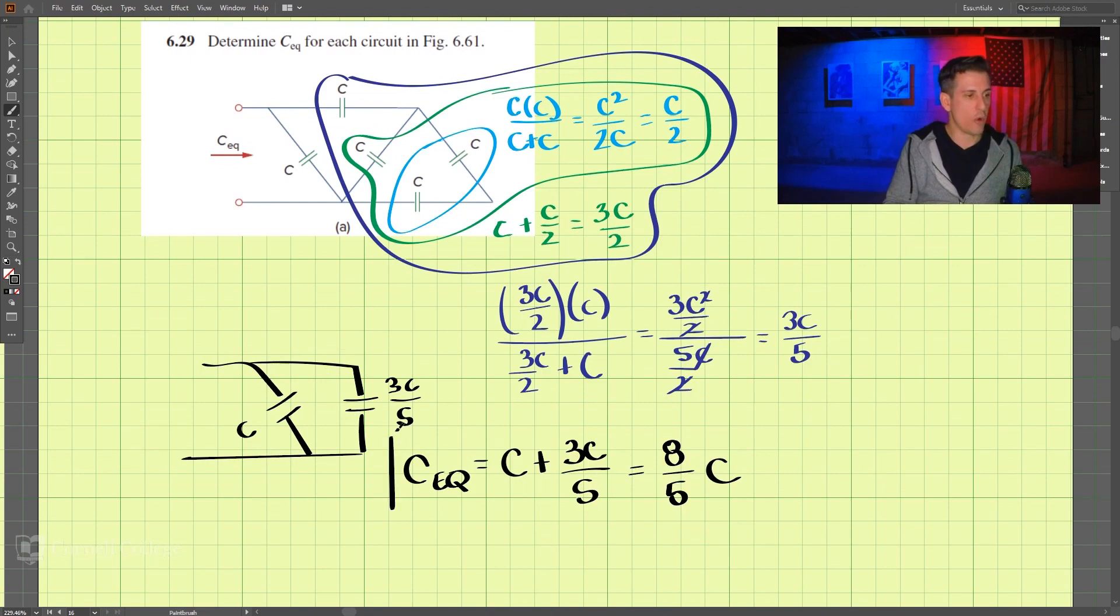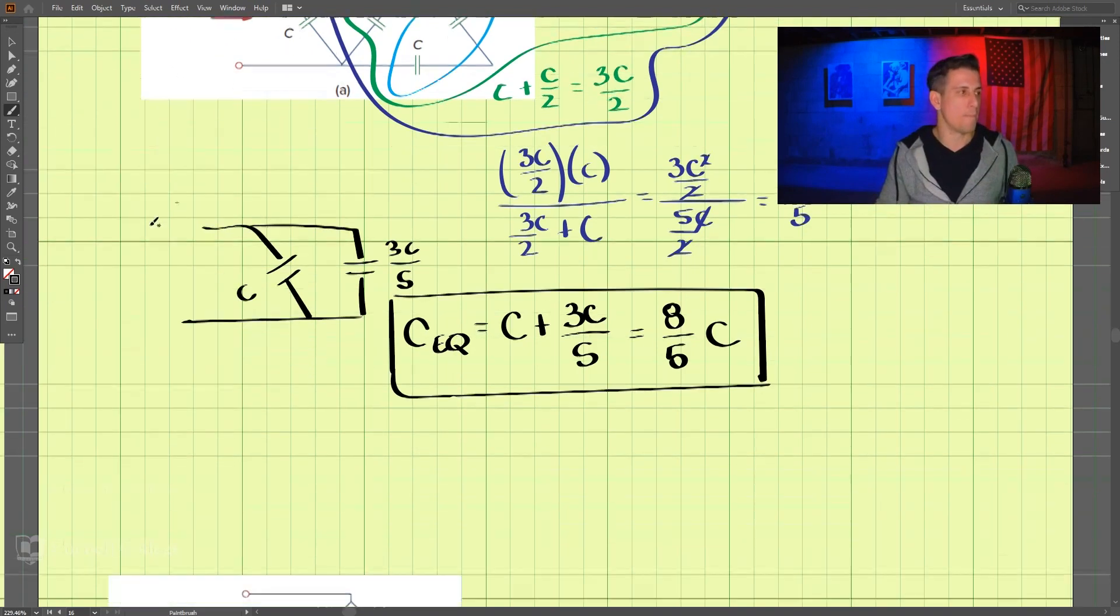the equivalent capacitance is equal to C plus 3C over 5, which is equal to 8 over 5C. And that is the equivalent capacitance for part A of this problem.